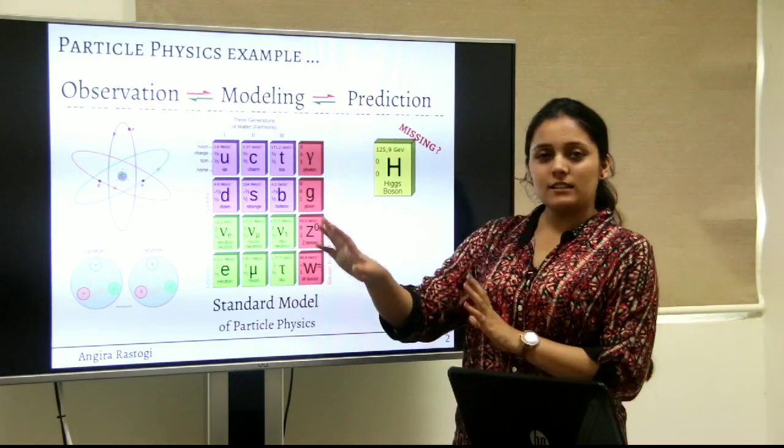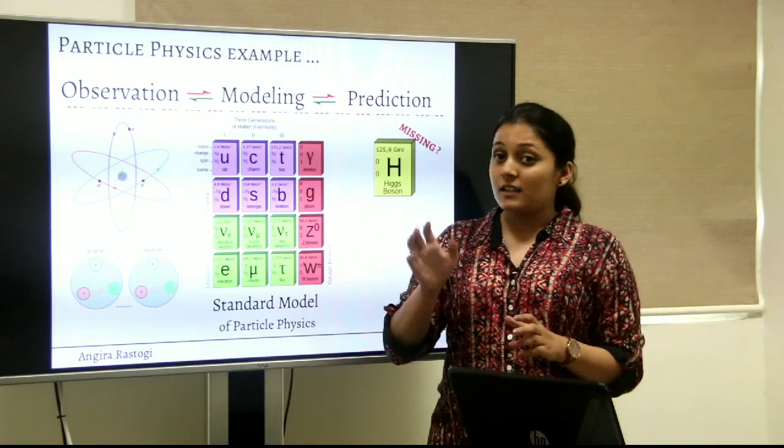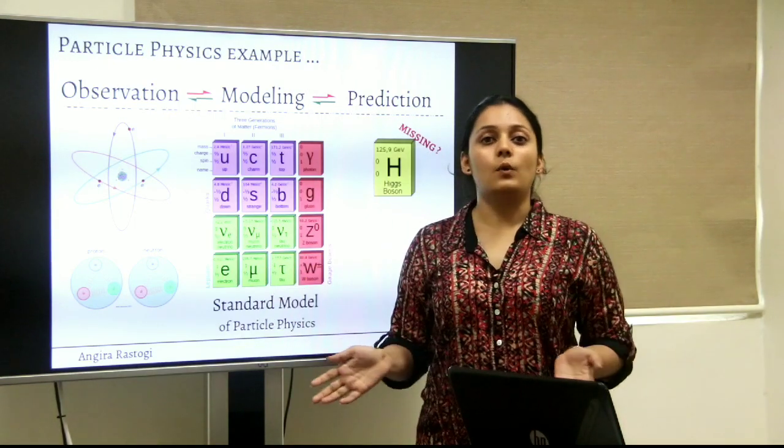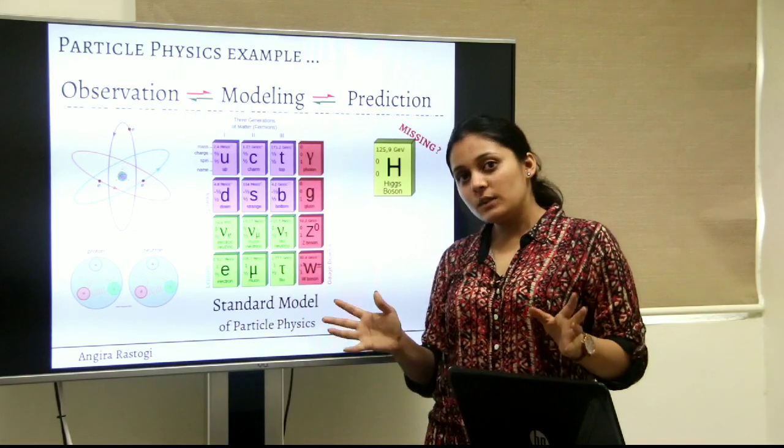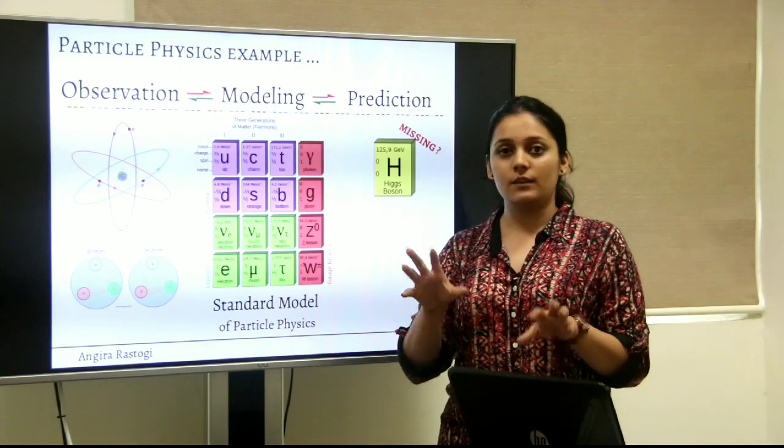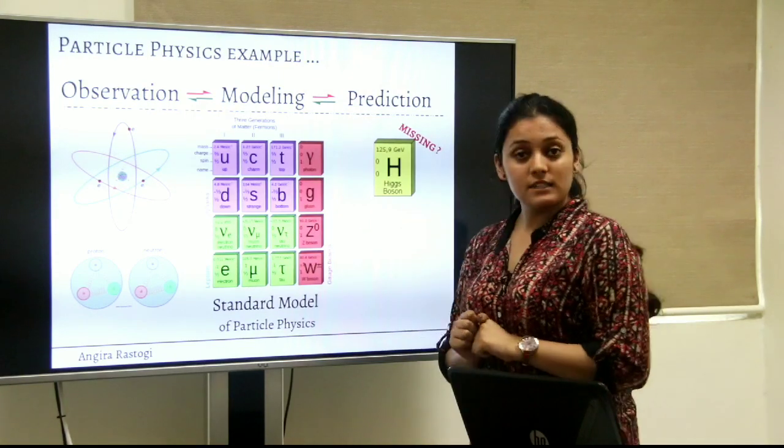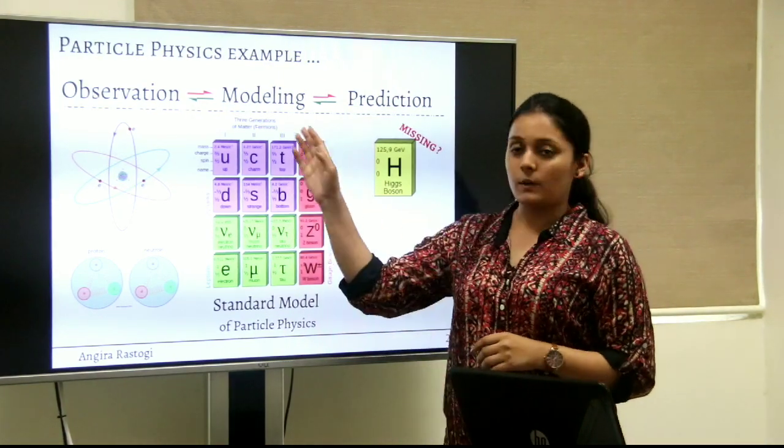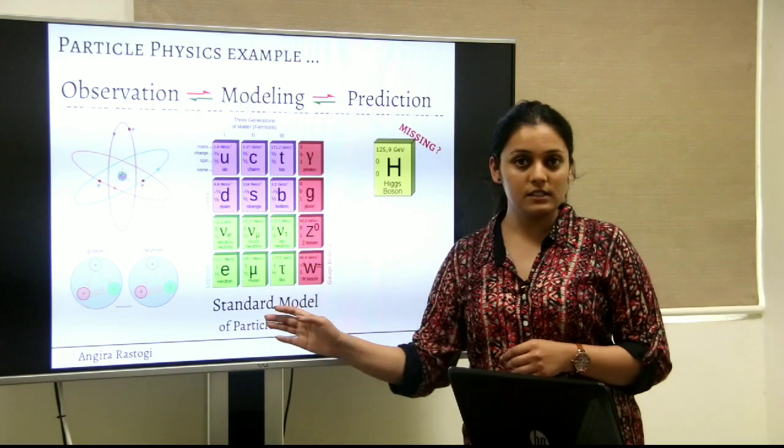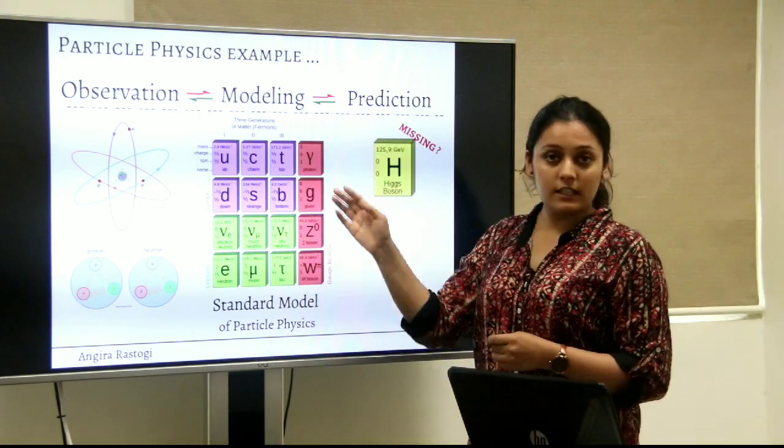So looking at this whole particle zoo, particle physicists decided to make a nice model out of it in which you can group the particles having similar characteristics in different classes. So for example, there is a class of particles called quarks, another class called leptons and another class called gauge bosons.